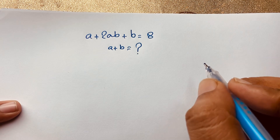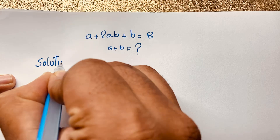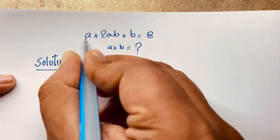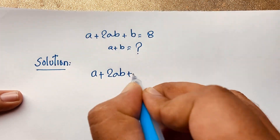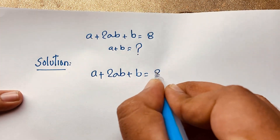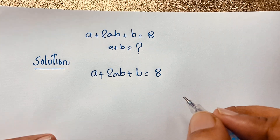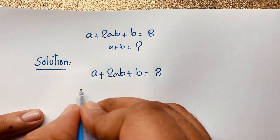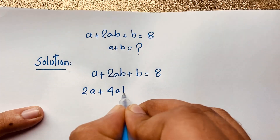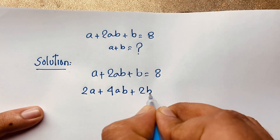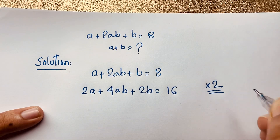It is a viral maths Olympiad question. Our question is A plus 2AB plus B is equal to 8. Now I multiply both sides by 2. So it will be 2A plus 4AB plus 2B is equal to 16.